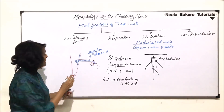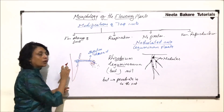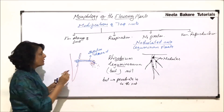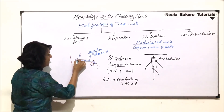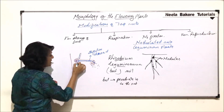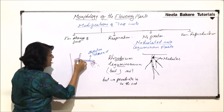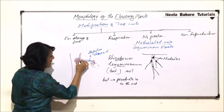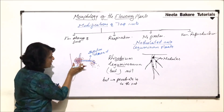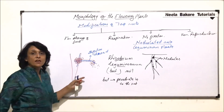Here we have the epidermis part and here are the cortex cells. This infection thread goes up to the cortex and it stimulates the cortical cells to divide.